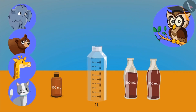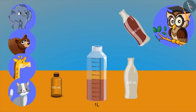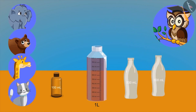We cannot put 500 ml into a 100 ml bottle. Now try to put it in the empty bottle of 1 liter. Oh, it became full now. Yes. So what have we learned from this? Two 500 ml bottles fill up to make one liter.